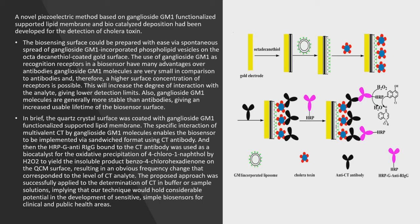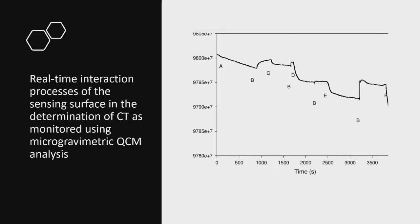The proposed approach was successfully applied to determination of cholera toxin in buffer and sample solutions, demonstrating potential for development of sensitive biosensors for clinical and public health areas. In the real-time sensing process, as the cholera toxin analyte interacts with GM1 ganglioside over time, the frequency decreases, as shown in the graph.